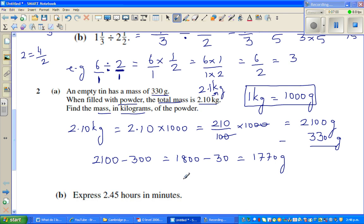And that I can write as kilogram. I'm going to divide this by 1,000. This is 1.77 kg. So the weight of the powder is 1.77 kg. And how can you check your answer? 1.77 plus 0.33. If you add this up, so this is 2.10. So that's right. This is the weight of the powder. This is the weight of the tin expressed in kgs.